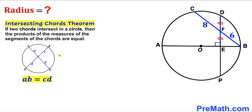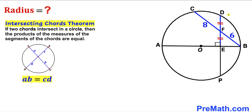As you can see in the diagram where chords AC and BD intersect each other, we get segments A, B, C, and D such that A times B equals C times D. Now let's focus on our own problem. We have chords BC and DP that intersect each other at point F.